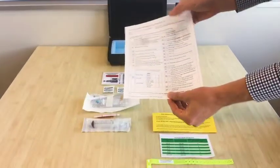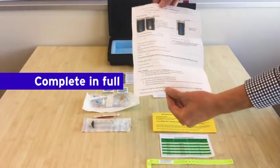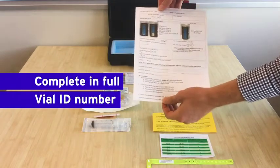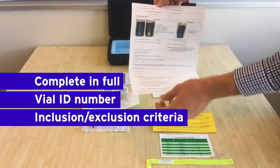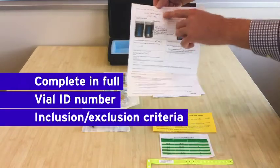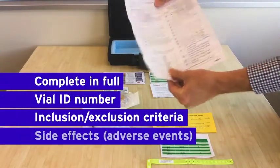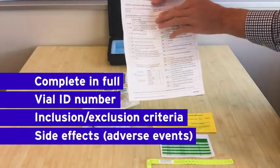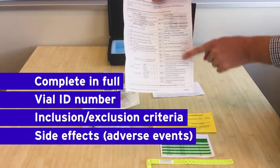The enrollment form is critical to be completed in full. It must include the vial ID, which is found on the label of the vial, confirmation that all inclusion and exclusion criteria were reviewed with the EPOS physician, and any side effects that may have been seen after administering the drug.